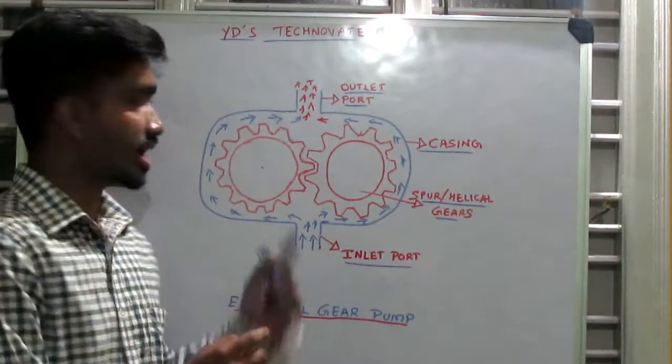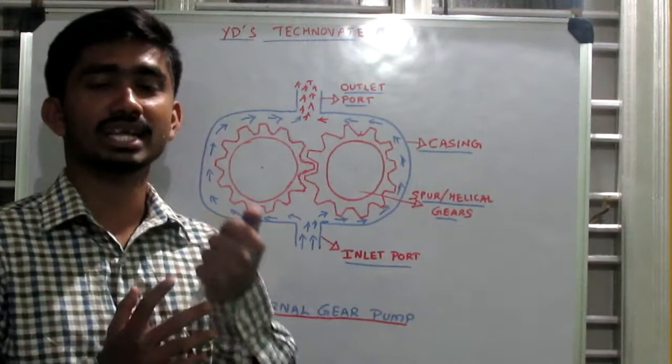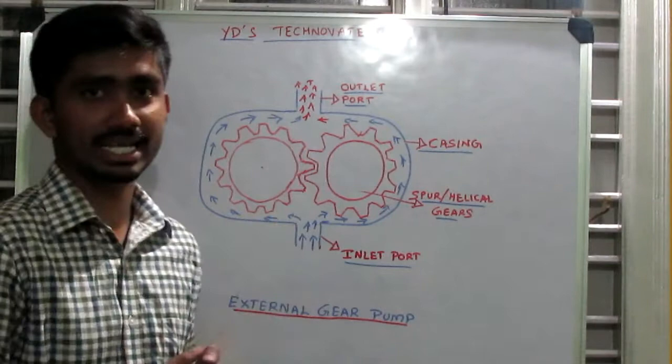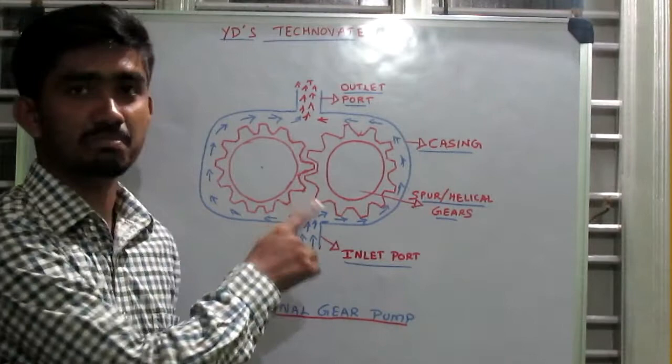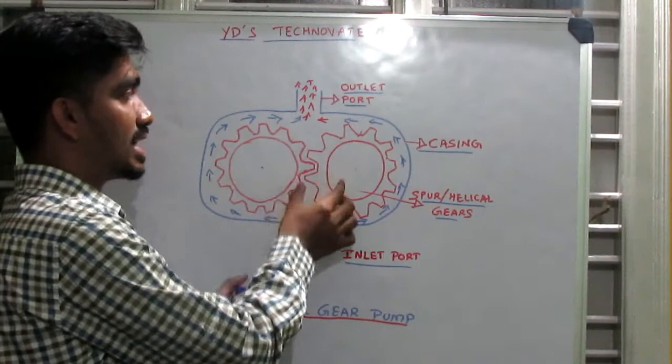Hence, these spur gears—one of the spur gears is connected to a prime mover which will be an electric motor—and this is meshed with another spur or helical gear. Thus, if this gear starts rotating and it is meshed, the other gear will also start to rotate.